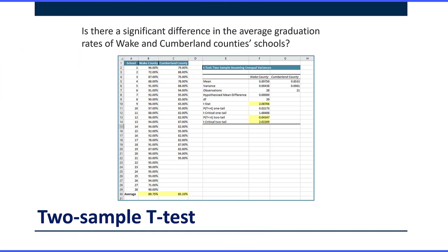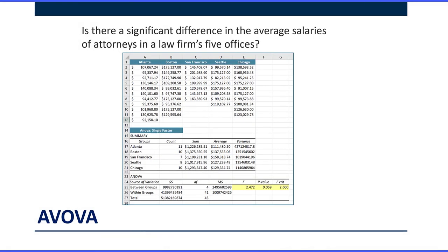You may be familiar with a t-test. We can use a two-sample t-test to see if there's a significant difference in the average of two groups, or two levels on a categorical variable, on some measurement. This is an example where we're comparing the average graduation rate of schools in two counties. If you've got more than two groups, more than two levels on your categorical variable, then you can use an ANOVA to compare the averages. Here we're comparing the average salaries of attorneys in a law firm's five offices.